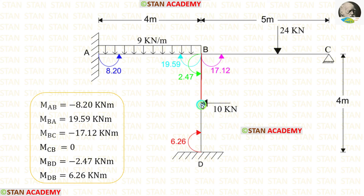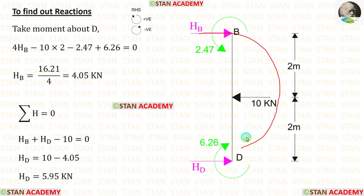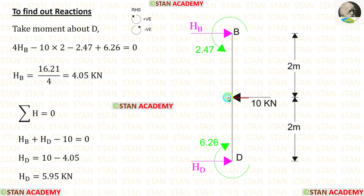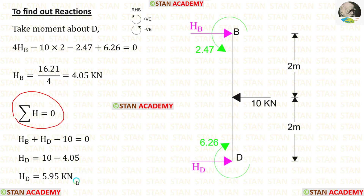For column BD, taking moments about D: HB acts clockwise at 4 m (+4HB), the 10 kN point load acts anti-clockwise at 2 m (−10×2), M_BD acts anti-clockwise (negative), and M_DB acts clockwise (positive). Solving gives HB. Applying ΣH = 0 gives HD.